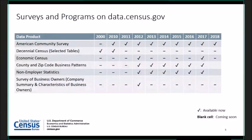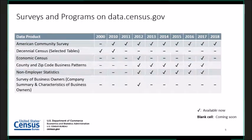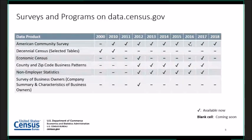The surveys and programs currently on data.census.gov include data from the American Community Survey from 2010 to the present, tables from the 2010 Census, some data from Census 2000, and economic surveys and programs such as the Economic Census and County Business Patterns, available from 2012 forward. We are working to migrate additional tables and onboard new surveys and programs beyond this list.